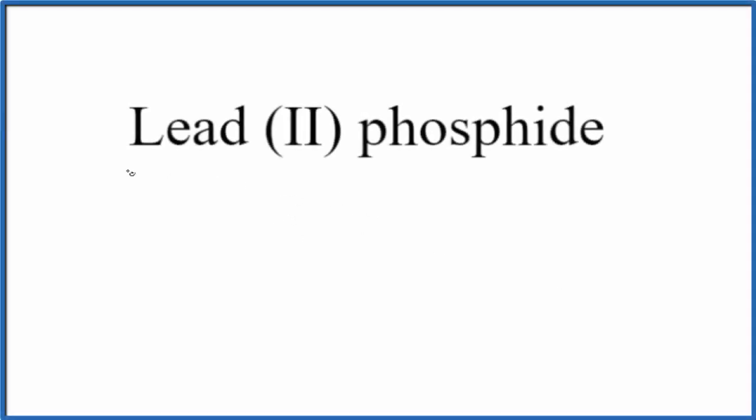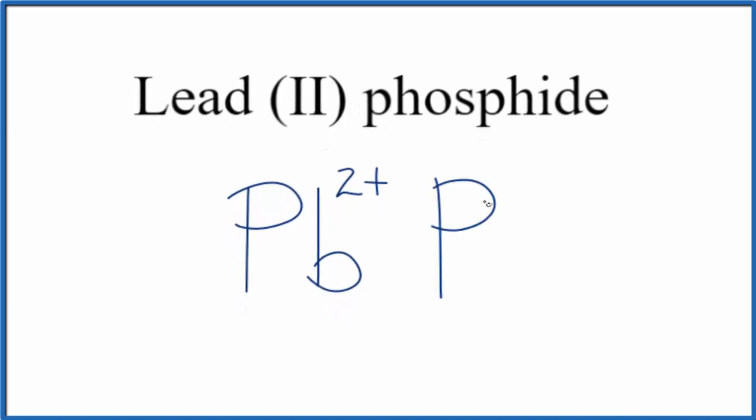If you were asked to write the formula for lead (II) phosphide, this is how you would do it. You'd write the symbol for lead, Pb, and since they give us the Roman numeral here, they're telling us the charge on the Pb. So they're saying the Pb will be 2+.